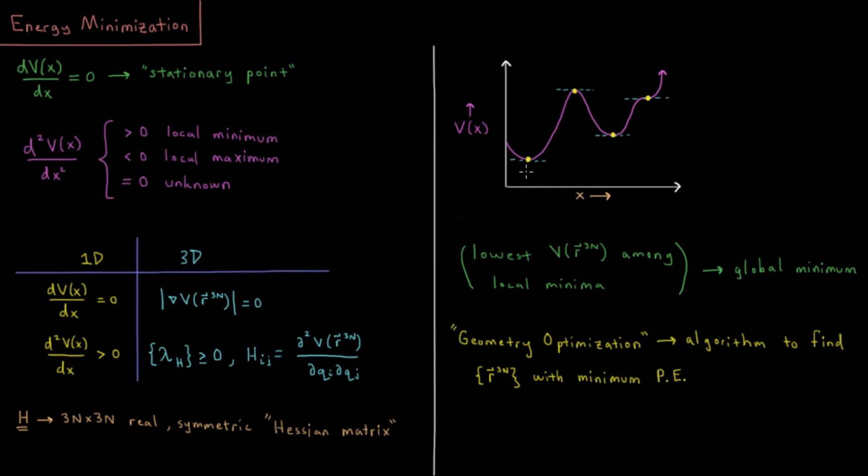So oftentimes in chemistry or other applications, you're trying to find various local and or global minimum energy structures of your molecule. So the structures where you have the lowest potential energy.